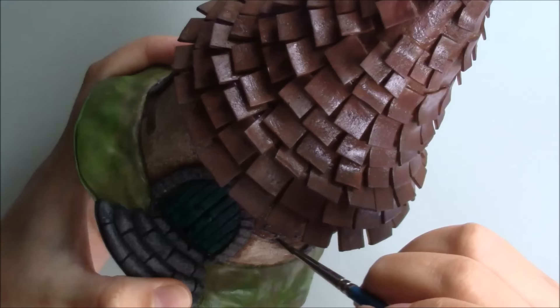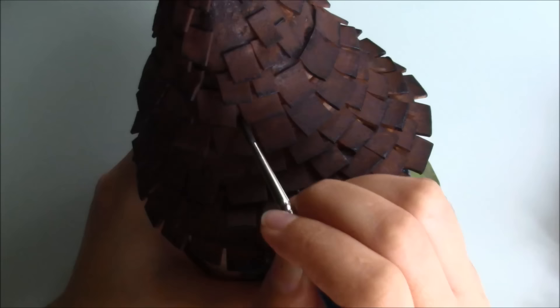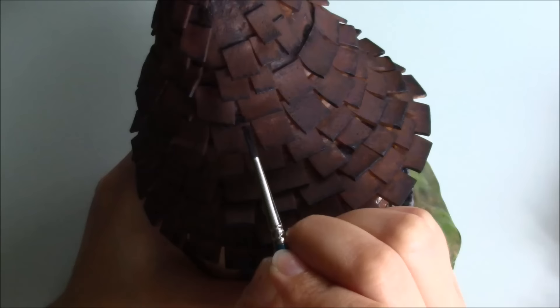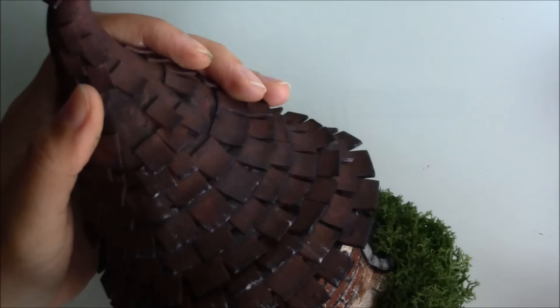To give the tiles a bit more definition, I brushed black acrylic paint from the edges up and in between them. Once the paint had dried I brushed down a residue of white paint with a very light hand to create a highlight.